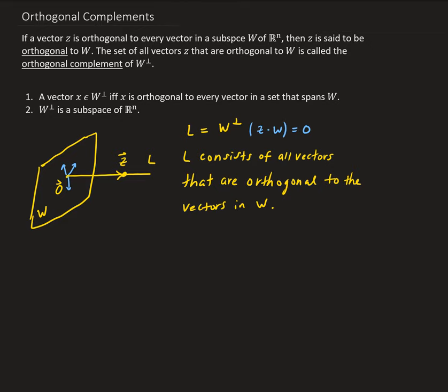To do this, we need to verify the three properties of a subspace: first, we need to show that the zero vector is in W perp; second, we pick two vectors in W perp, add them together, and show the result is also in W perp; and third, we take a scalar, multiply it by a vector in W perp, and show that is also in W perp.